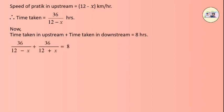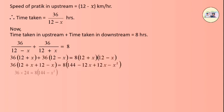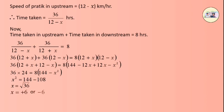Time taken upstream plus time taken downstream equals 8 hours. Therefore: 36 / (12 − x) + 36 / (12 + x) = 8. After cross multiplication and further solving, we get x² = 144 − 108 = 36, therefore x = ±6. Since x = −6 is not possible, the speed of the water current is 6 km per hour.